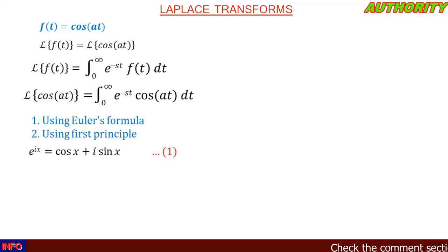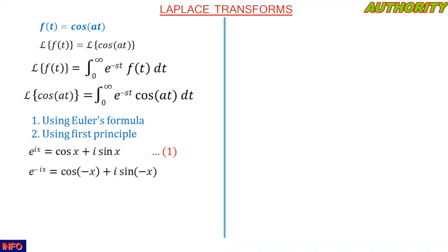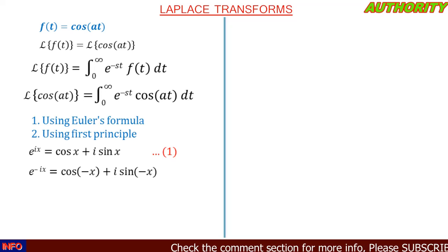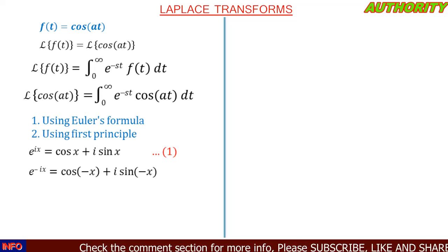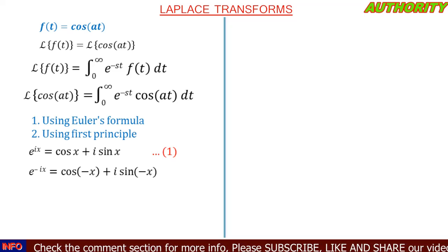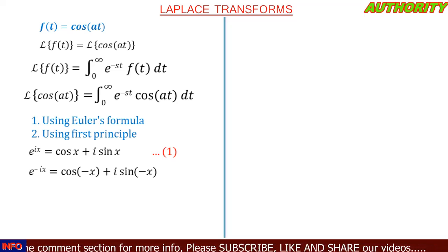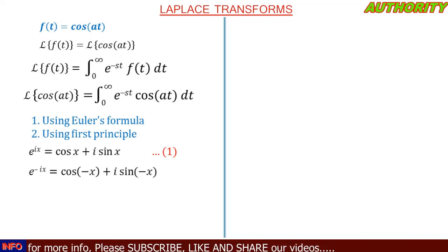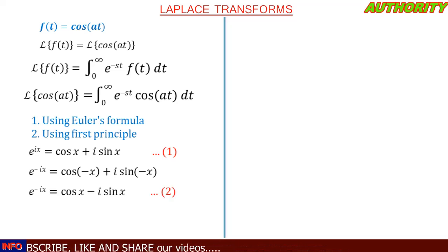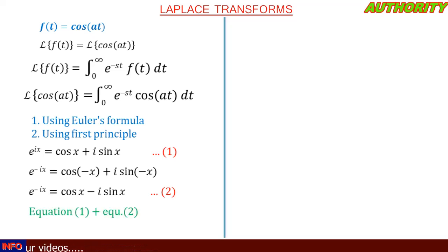Now what if we have x to be negative? That means we are going to have e raised to the power of minus ix, giving us cos(−x) plus i·sin(−x). Since cosine is an even function, cos(−x) equals cos(x), and the minus sign stays for sine, so we get cos(x) minus i·sin(x).